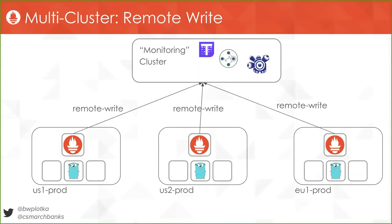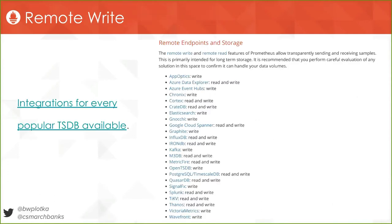What's getting more and more popular is remote write — switching to the opposite model. Instead of pulling data, you push it somewhere else and persist it there, sometimes into cheap storage. Prometheus uses the remote write feature to stream data samples — every sample or the samples you want to stream — into some other cluster. There are many solutions that allow you to receive this data, including Thanos, Cortex, and Observatorium, which is a kind of SaaS product configuration. There are many other solutions available as well.